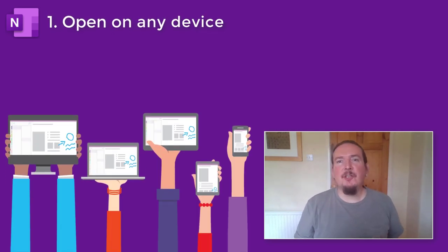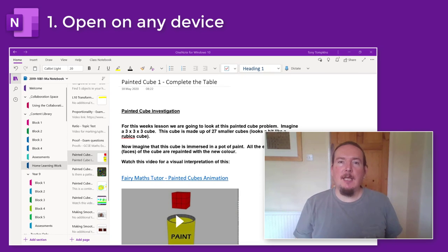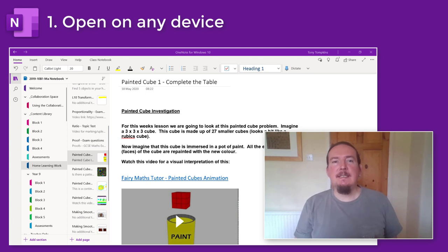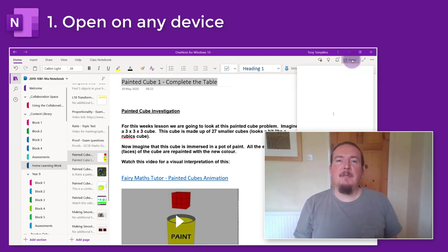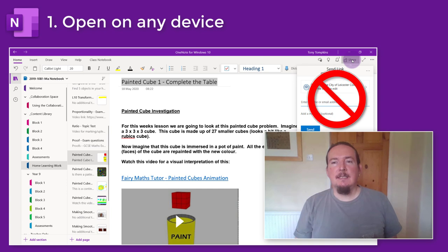Let's start with students opening the class notebook for the first time. A OneNote class notebook is a bespoke digital notebook set up specifically for you and the students in your teaching group. Before students can start using it they will need to locate it online and open it for the first time. Students will already have all the privileges they need to access the notebook, so there's no need to use the share tool built into OneNote — doing so may end up messing up the intricate privileges set up during the notebook creation process.